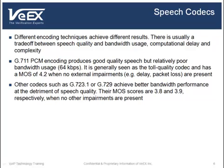Many other codecs can be used for VoIP. Codecs such as G723.1 or G729 achieve better bandwidth performance but have worse speech quality than G711 PCM. Their MOS scores are 3.8 and 3.9 respectively when no external impairments are present.